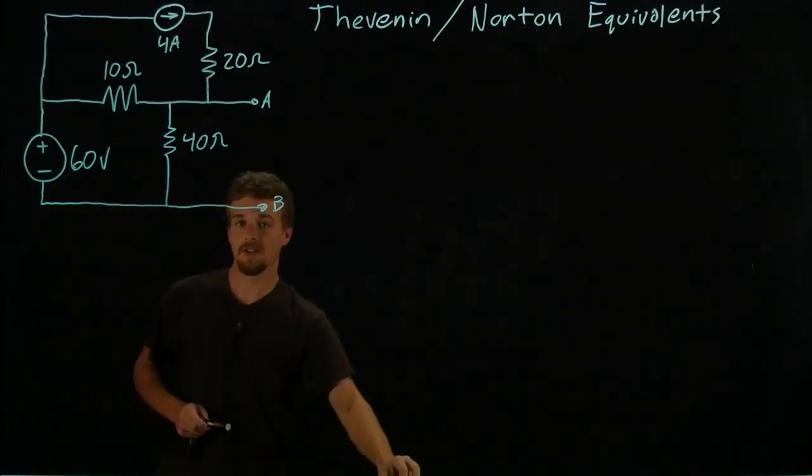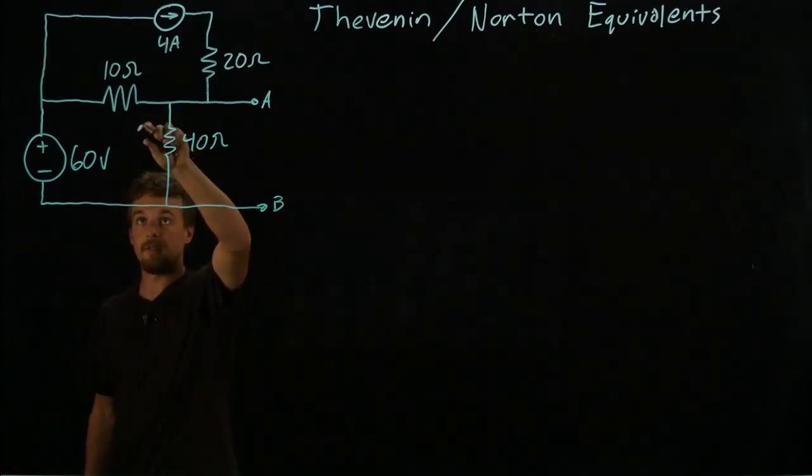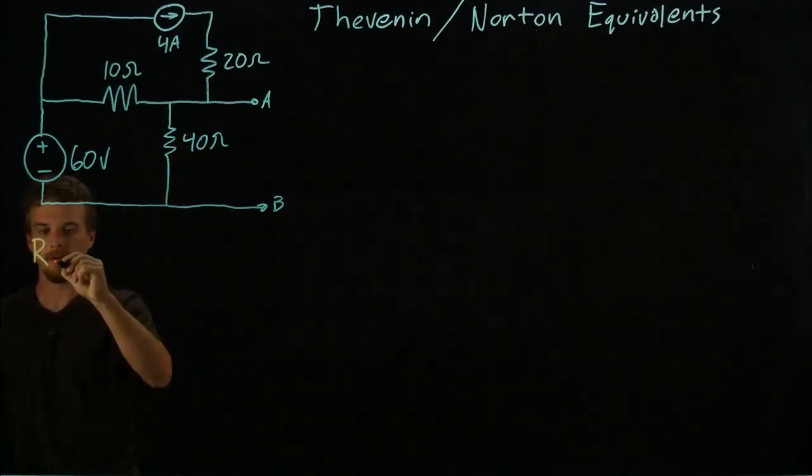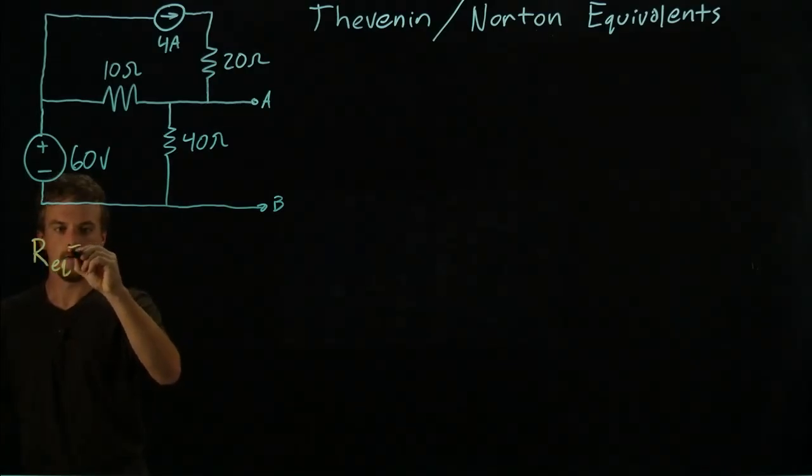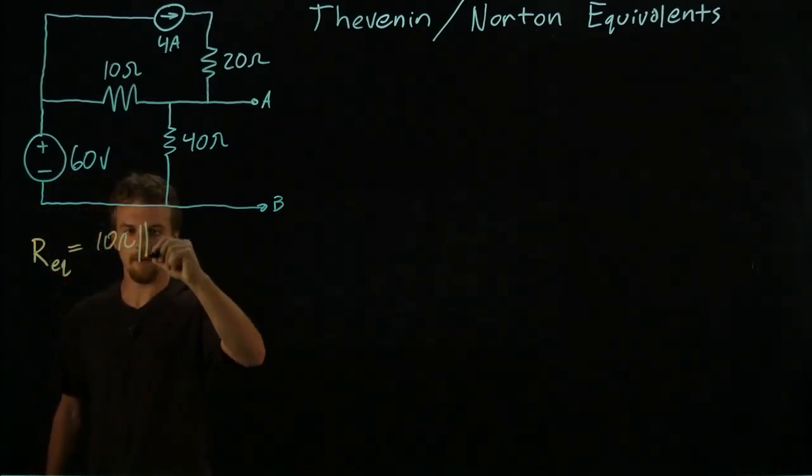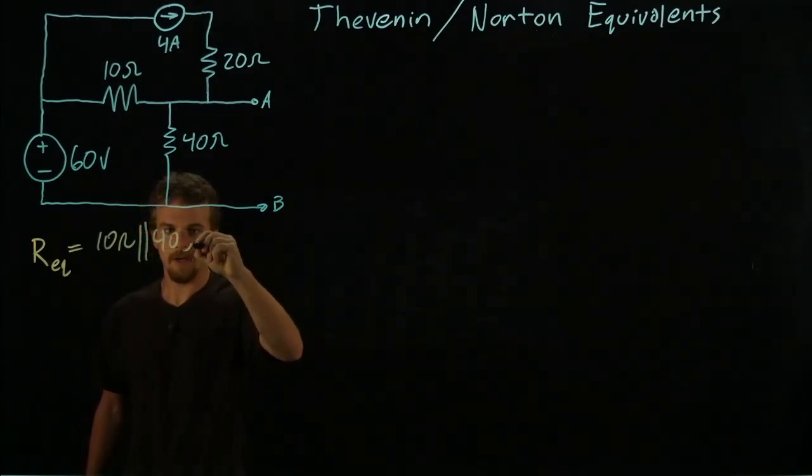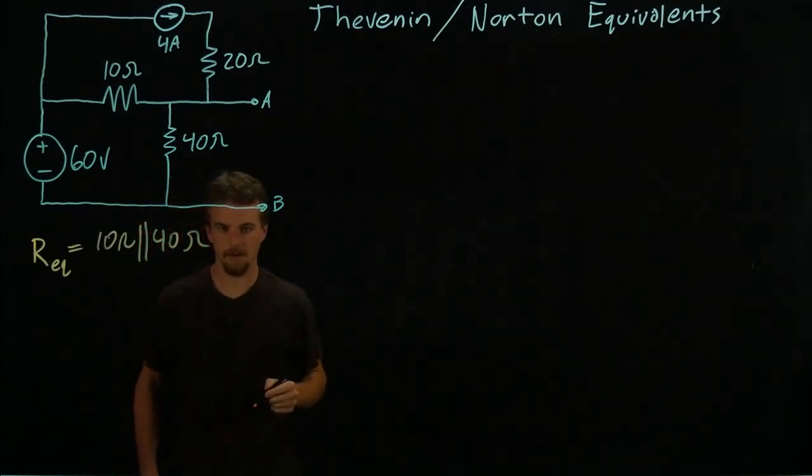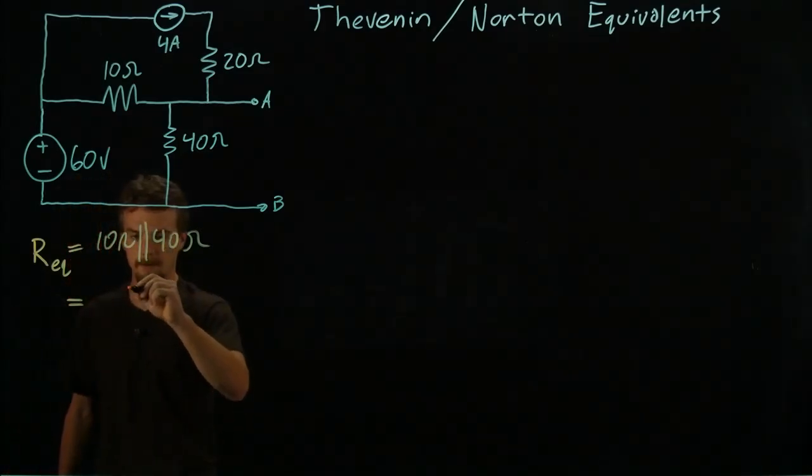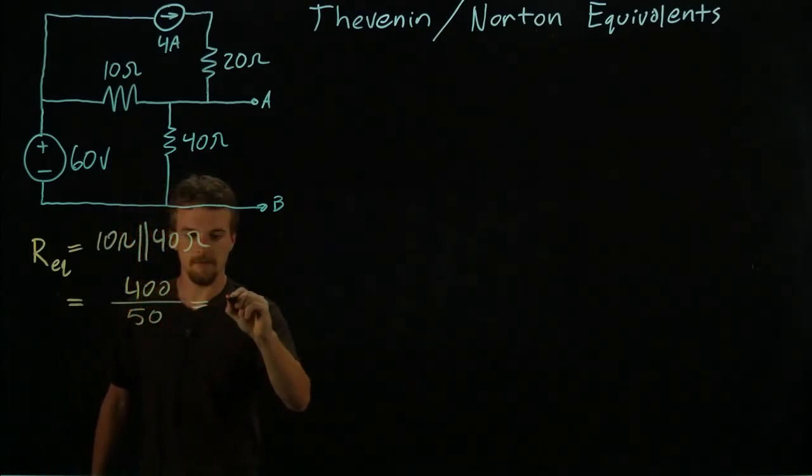And what we'll see is that R equivalent is equal to this resistor in parallel with that resistor. So it's equal to 10 ohms in parallel with 40 ohms. A little shortcut for finding the value of two resistors in parallel is their product over their sum, so we'll have 400 over 50, that is equal to 8 ohms.